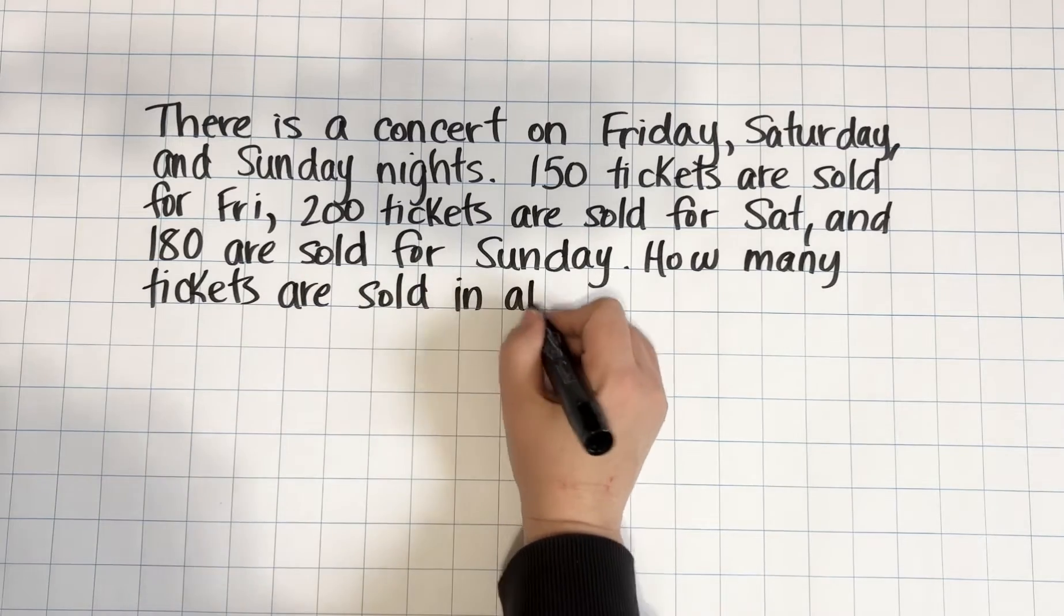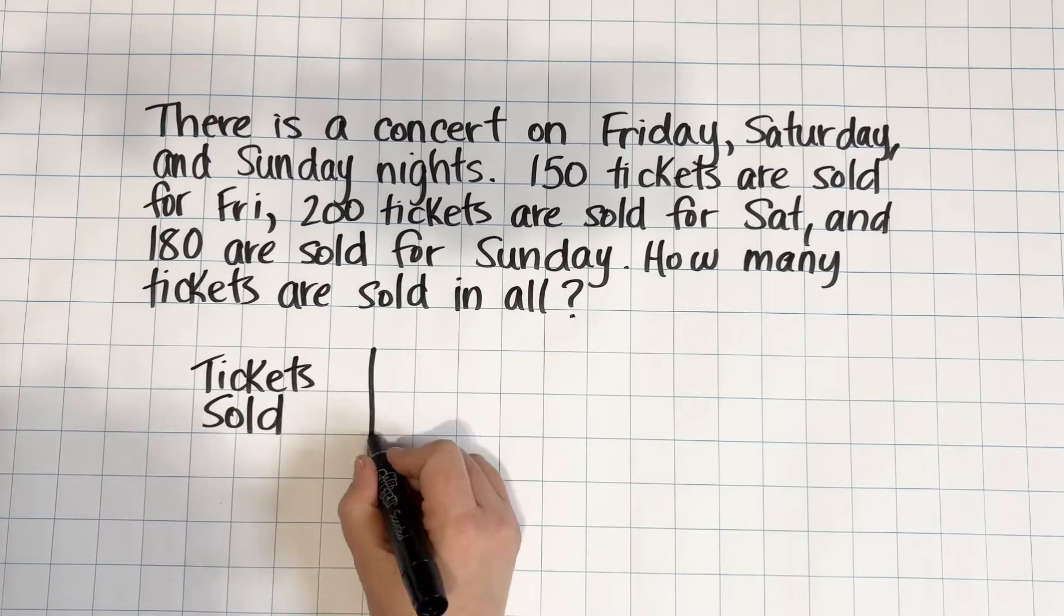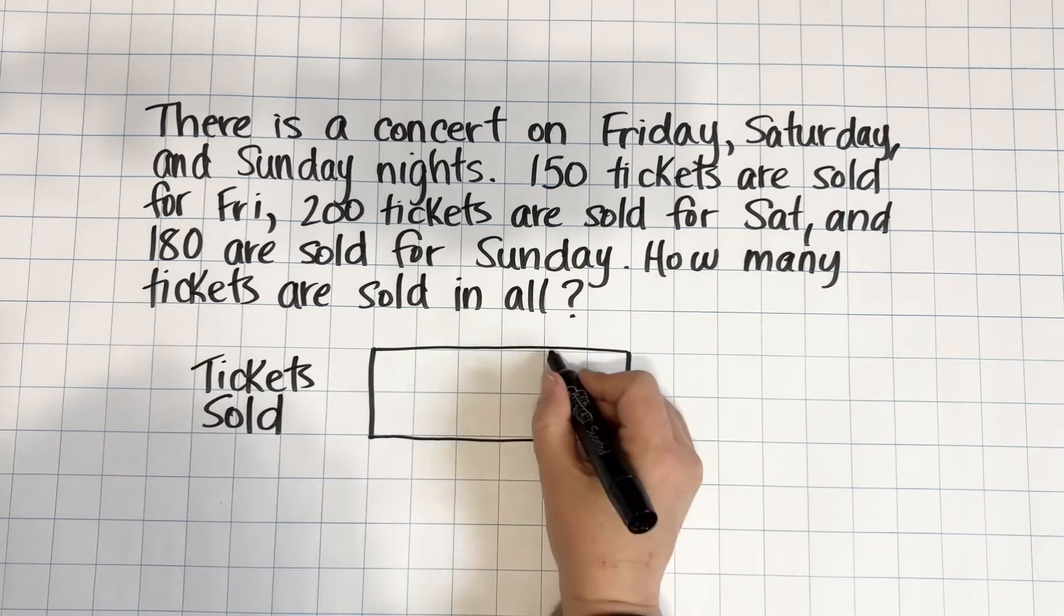In this first example, we know how many tickets were sold on Friday, Saturday, and Sunday, so we just need to add them up. Pretty straightforward.